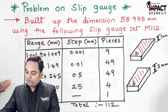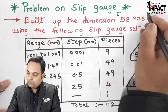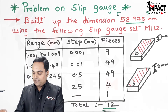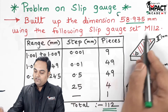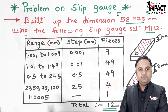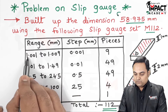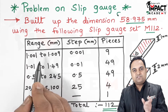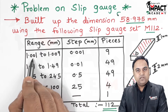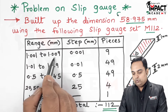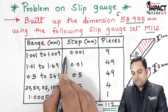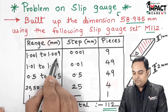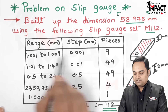In this problem, the height to be adjusted is 58.975 mm using the M112 set. The first range is 1.001 mm to 1.009 mm, increasing in steps of 0.001 mm, giving nine pieces.